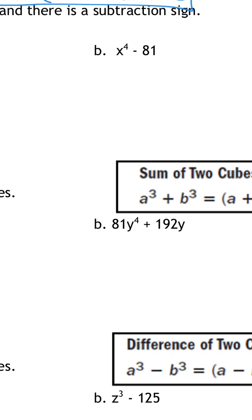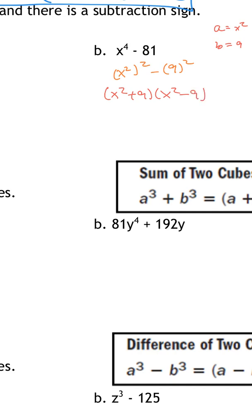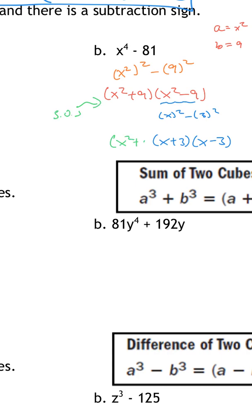For x⁴ − 81: x⁴ is (x²)² and 81 is 9², so a = x² and b = 9, giving (x² + 9)(x² − 9). Now x² − 9 is another difference of squares since 9 = 3², so that factors further into (x + 3)(x − 3). The x² + 9 is a sum of squares and cannot factor. So the fully factored form is (x² + 9)(x + 3)(x − 3). Make sure you keep breaking it down as far as it can go.